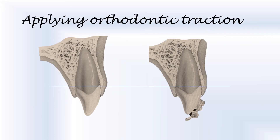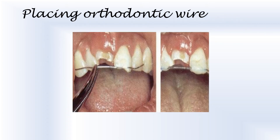In cases of completed root development, spontaneous re-eruption of the tooth is unpredictable, therefore orthodontic extrusion is indicated. The first step is placing the orthodontic wire — a 0.5 mm thick orthodontic wire is taken and cut to a length that includes two adjacent teeth on either side of the intruded incisor. This wire is bent to follow the curvature of the dental arch and attached to the teeth with the help of acetate and composite.